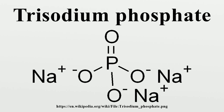Trisodium phosphate is produced by neutralization of phosphoric acid using sodium hydroxide, often with sodium carbonate. Carbonate can only produce disodium phosphate: Na₂CO₃ + H₃PO₄ → Na₂HPO₄ + CO₂ + H₂O, then Na₂HPO₄ + NaOH → Na₃PO₄ + H₂O.